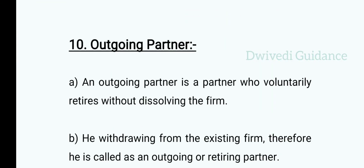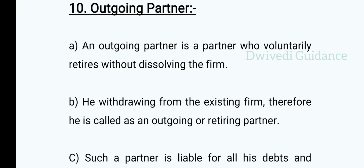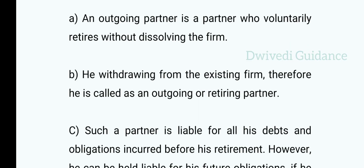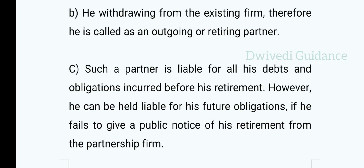Last is outgoing partner. An outgoing partner is a partner who voluntarily retires without dissolving the firm. The firm is not dissolved; he simply withdraws from the existing firm, and therefore he is called an outgoing or retiring partner. Such a partner is liable for all debts and obligations incurred before his retirement. However, he can also be held liable for future obligations if he fails to give a public notice of his retirement from the partnership firm.